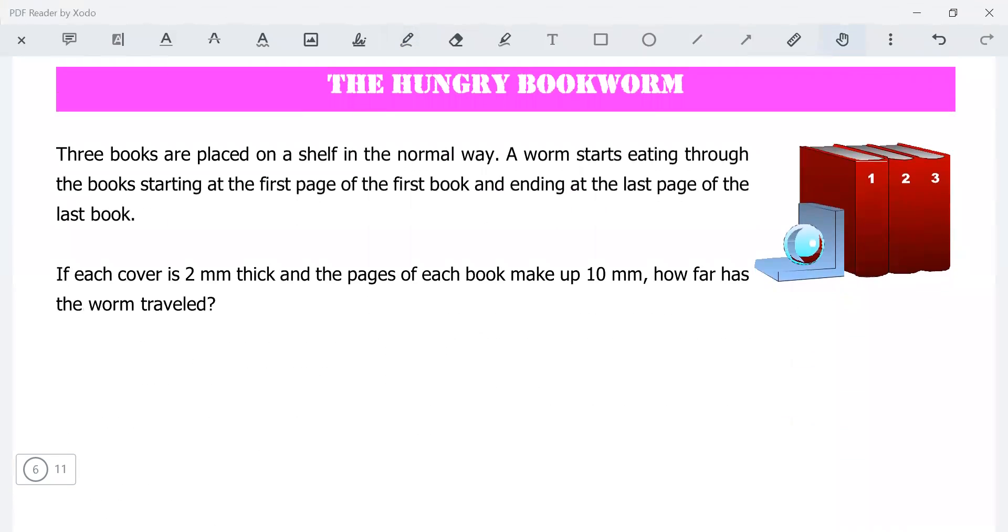This is a very surprising problem. Three books are placed on a shelf in the normal way. There you see the books there, right? And let me just draw what I think it would be like: one book, two books, three books.